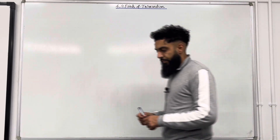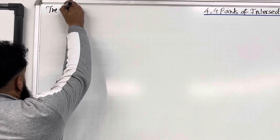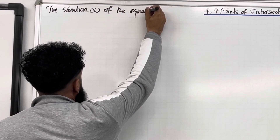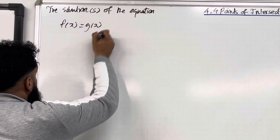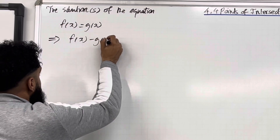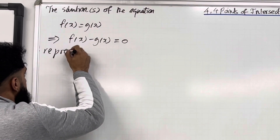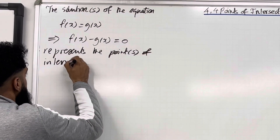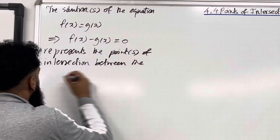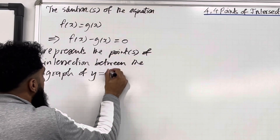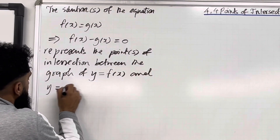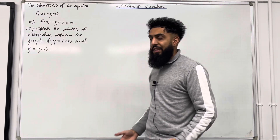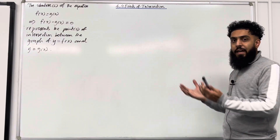Let's have a look at the key fact of this particular section. The solution, or solutions, of the equation f(x) = g(x), which can be rewritten as f(x) − g(x) = 0, represents the point or points of intersection between the graph of y = f(x) and y = g(x). Of course, if this equation has no solution, there will be no point of intersection between the two graphs. That is the key fact of this particular section.